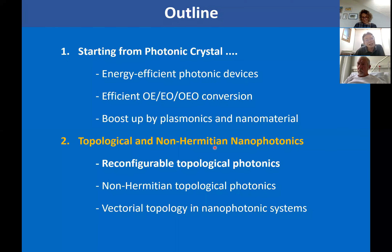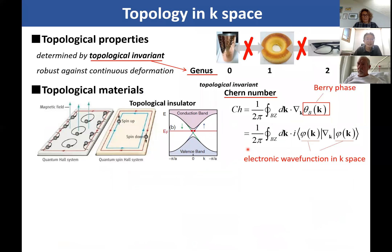Let's move on to the second part — topological and non-Hermitian nanophotonics. I will begin with some basics of topological physics. Topological properties are determined by certain topological invariants. A very simple example is the genus — the number of holes: a cup has no holes, a donut has one hole, and a glass has two holes.